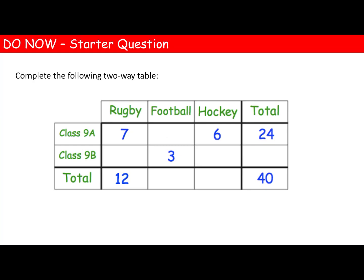We need to fill in six gaps here. I'm going to fill in the total for 9B first of all. We've got 40 subtract 24, which gives us 16.